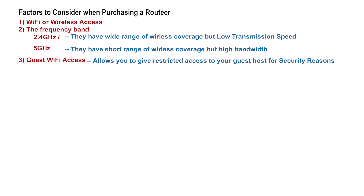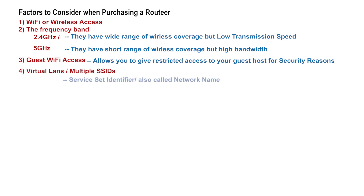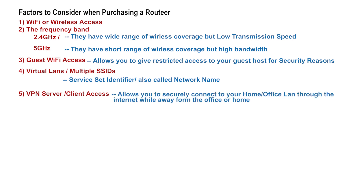Examples include when you visit a hotel, restaurant, or other public places and get guest access to their network. Fourth, virtual LANs and multiple SSID. Consider if the router can provide multiple SSIDs as well as virtual LAN capability. SSID stands for Service Set Identifier — a set of characters that uniquely names a wireless network, also referred to as the network name. For example, when you scan for available Wi-Fi on your phone, what you see are the SSIDs. Fifth, VPN server and client access. Some routers give you access to securely connect to your home or office network from a remote area as if you were physically present — that is the work of a VPN server.